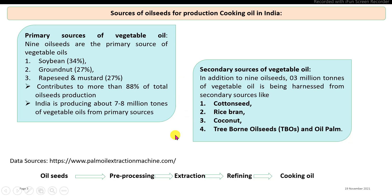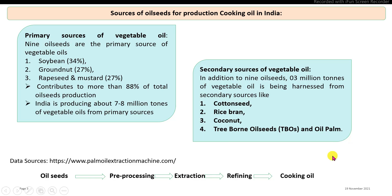In the production process, the main steps are: first, oil seeds are properly pre-processed; after pre-processing, the oil is extracted from the oil seeds; then a refining process removes contaminants or unwanted particles; and finally, we obtain the cooking oil.